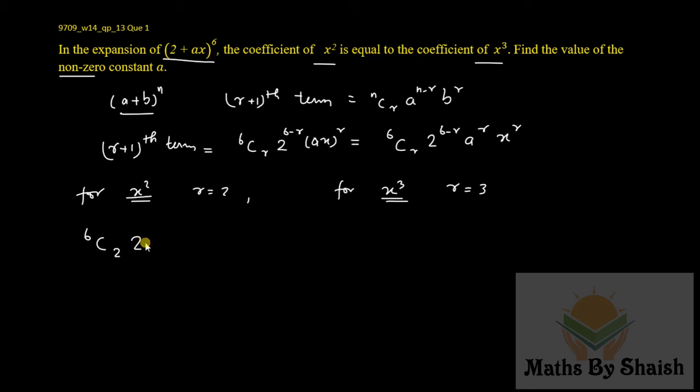6C2 × 2^(6-2) × a² is equal to 6C3, because I am just putting the value of r as 2 and 3. Since they are equal, I am making them equal: 2^(6-3) × a³.